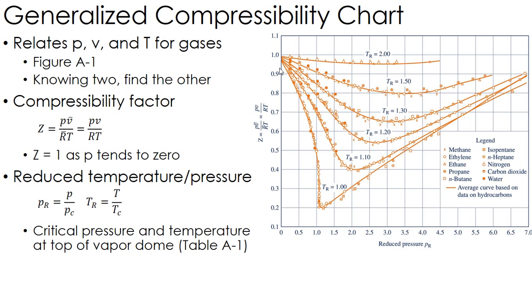You remember we talked about the critical point on the vapor dome. This is the pressure and temperature at that critical point. And these are actually shown in table A-1. So it's kind of like a relative, relative to that vapor dome where our pressure lies.